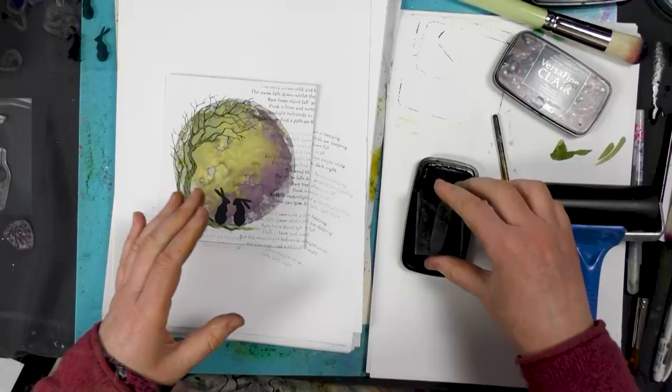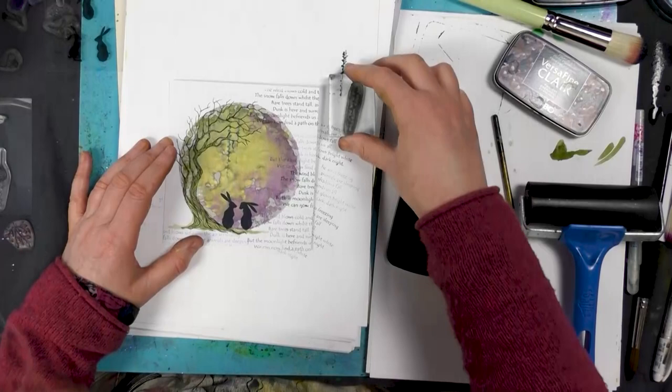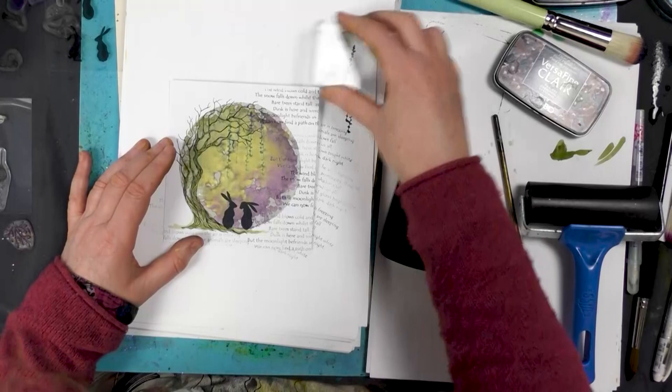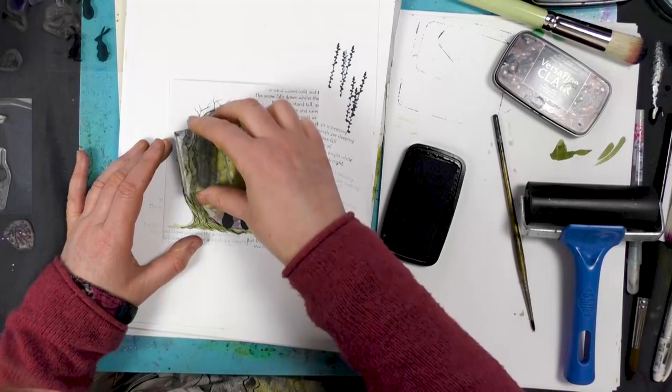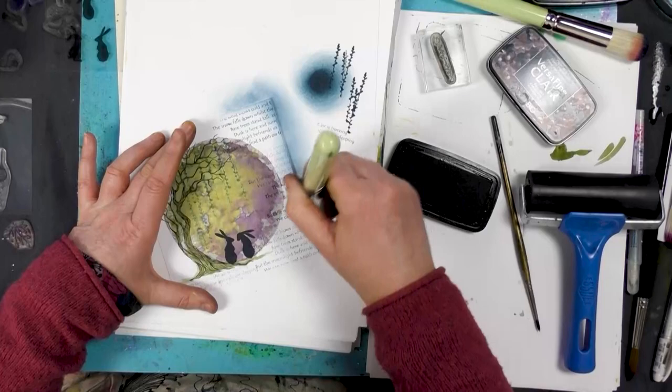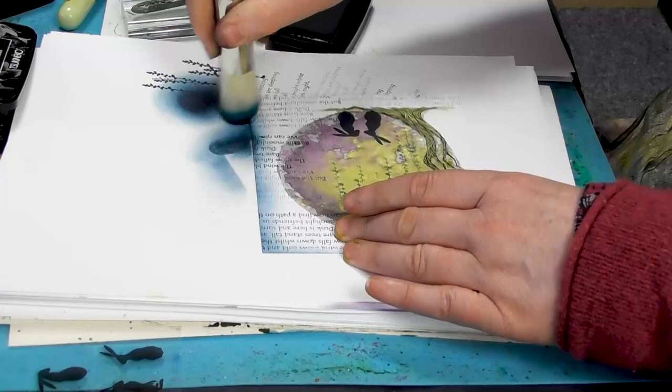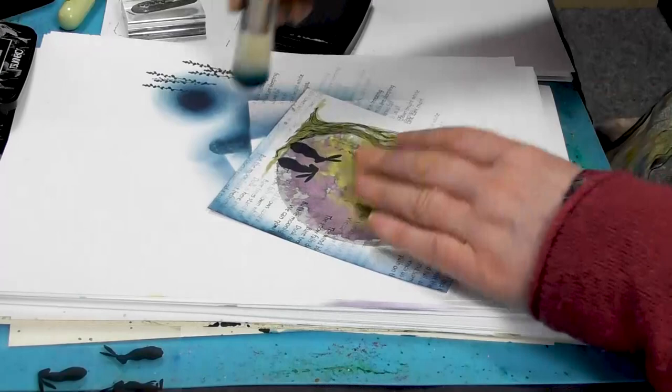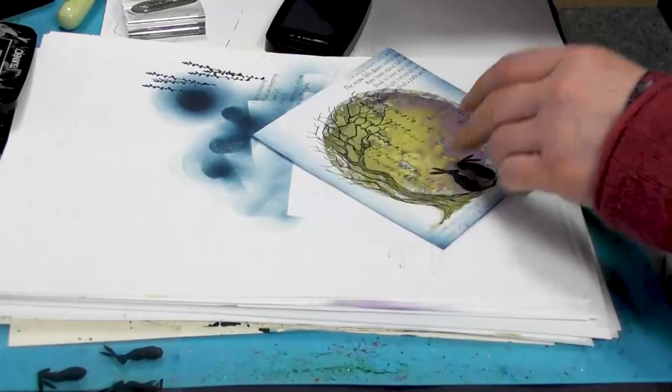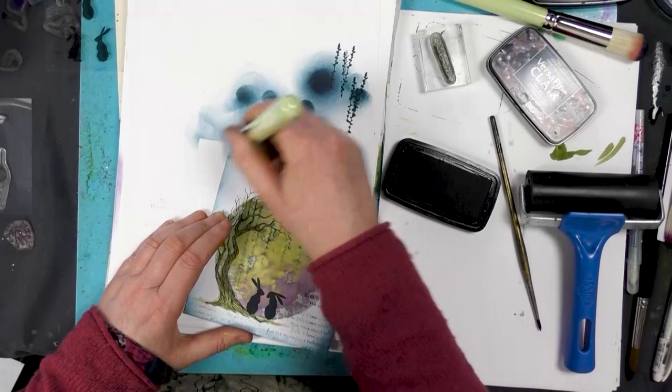I've got a little foliage stamp here that I'm using to create some little leaves falling down. Now, taking the Twilight again, I'm just going to use my stencil brush and sweep over the edge. Nice and quick and easy. That gives it a really nice hue around the edge and pulls your eye into the center.